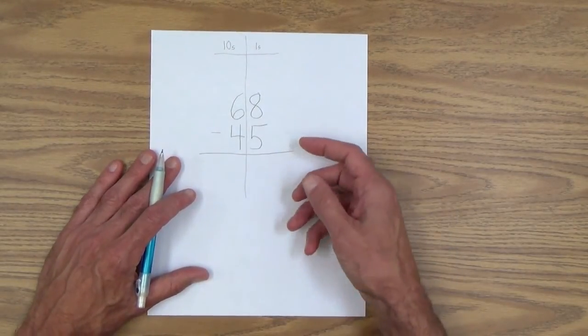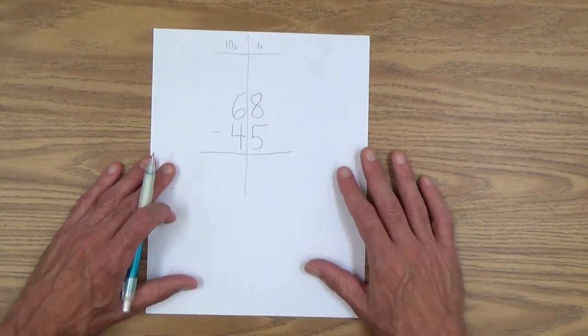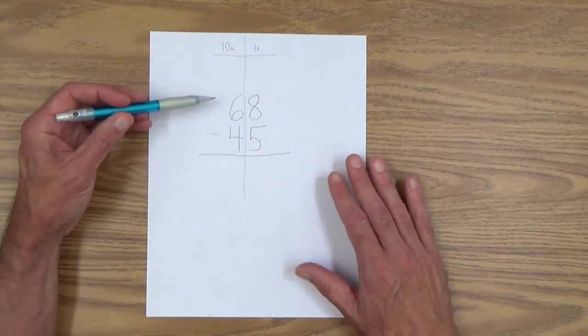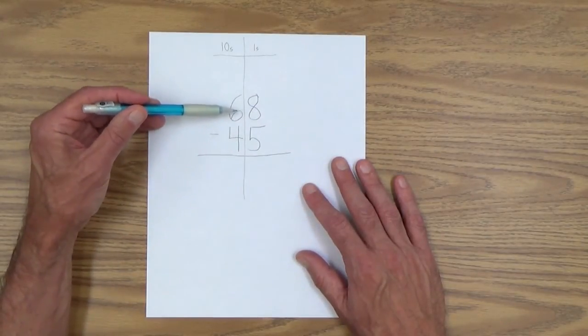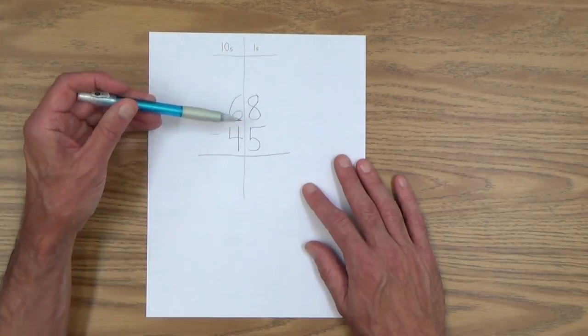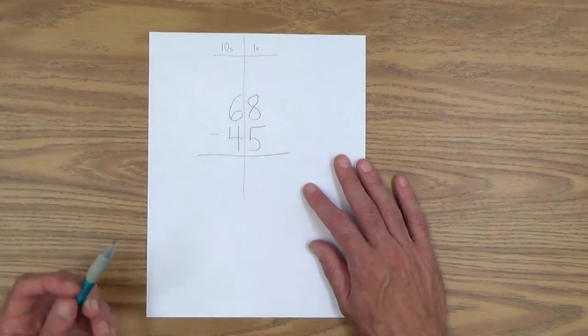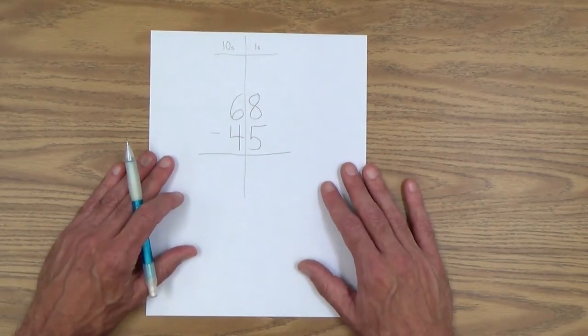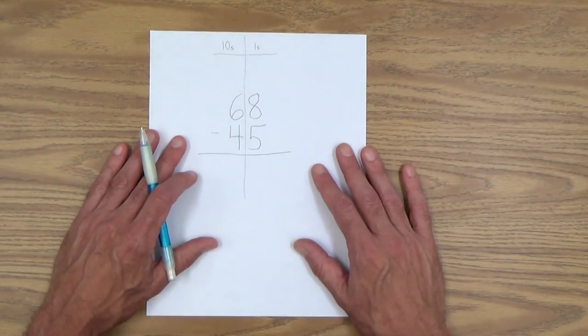And then you follow, like so many arithmetic operations, you simply follow the steps and the rules. So once again, we're going right to left ones columns to tens columns. And of course, you could have her read these numbers and ask her, well, how many tens are in 68? How many ones? How many tens are in 45? How many ones? Just to reinforce that she's understanding what we're doing here.